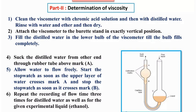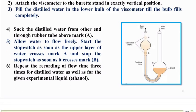Procedure Part 2: Determination of viscosity. Clean the viscometer with chromic acid solution and then with distilled water. Rinse with water and ether and then dry. Attach the viscometer to the burette stand in exactly vertical position. Fill the distilled water in the lower bulb of the viscometer till the bulb fills completely. Suck the distilled water from the other end through the rubber tube above mark A. This is the position. Allow water to flow freely. Start the stopwatch as soon as the upper layer of the water crosses mark A.